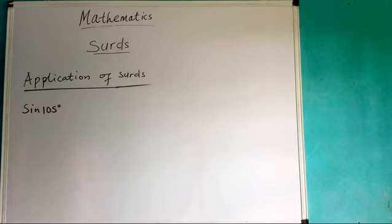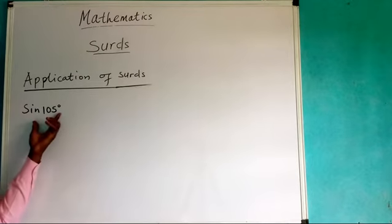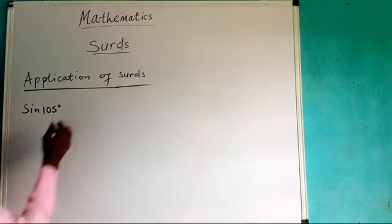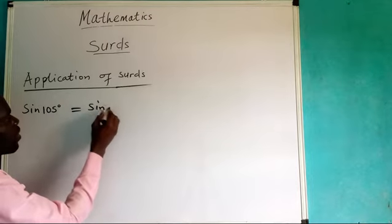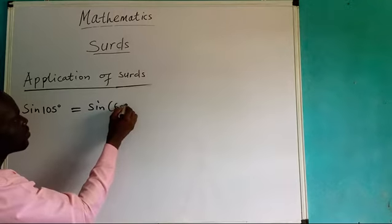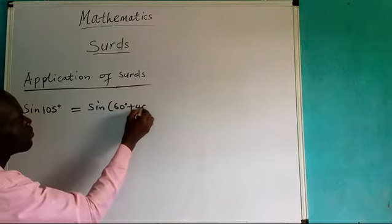We can see the trigonometric ratio for sine 105 degrees. It simply means that we can add up two angles to give 105. You can have the angle now. We simply add up 60 degrees plus 45 degrees.